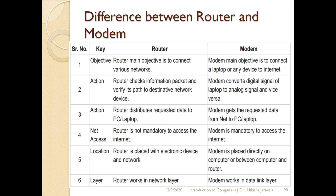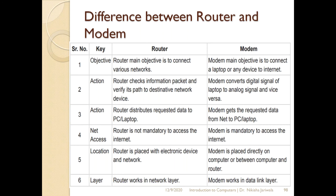The fifth difference is related to location. The router is placed with electronic devices and the network. The modem is placed directly on a computer or between the computer and the router. The sixth difference is the OSI layer. The router works at the network layer of the OSI model, as mentioned earlier. The modem works at the data link layer, which is another layer in the OSI model. These details will be covered in depth in your network technology subject. So these are the six differences between the router and the modem, and these differences will also be useful in your exam.